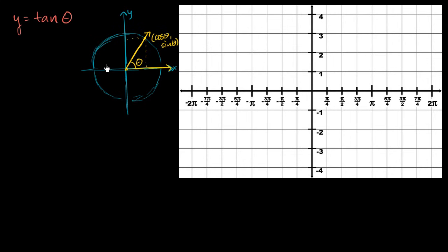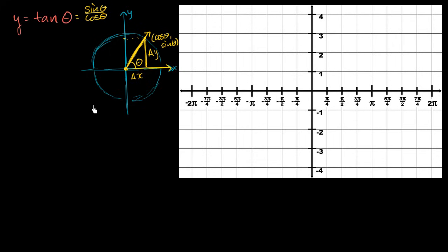But we're concerned about tangent of theta. We know the tangent of theta is the same thing as sine of theta over cosine of theta. Or if you're starting from the origin and taking the value of the y-coordinate over the x-coordinate, it's essentially the slope of this line — your change in y over change in x. So the slope of this ray is going to help us visualize what the tangents of different thetas are.